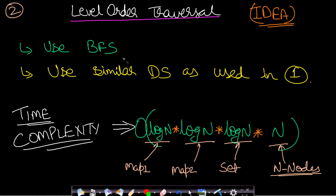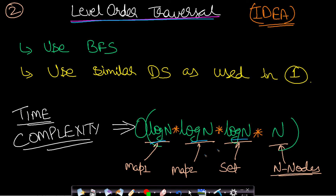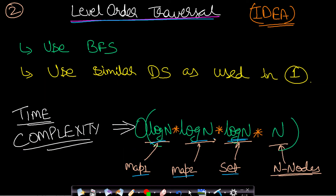A map of map keeps track of x,y position and a set keeps sorted values for the same x,y positions. You can also solve this using BFS level order traversal with similar data structures — a queue plus map of map of set. The time complexity: maps have log n operations, sets also have log n operations, and in the worst case with n elements, it becomes n log³ n.